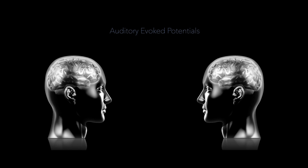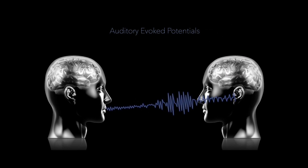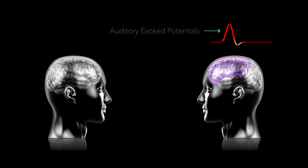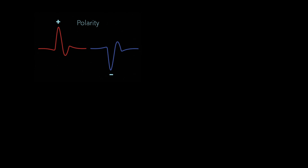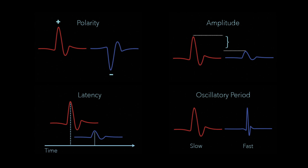A well-defined example of such functional connectivity can be observed in a series of responses called the auditory evoked potentials, which are peaks that appear in the EEG when hearing a sound. These peaks can be defined by their orientation, their amplitude, and their peak latency — that is, when they occur relative to the onset of a sound. They can also be described by their oscillatory period or frequency of the peak.